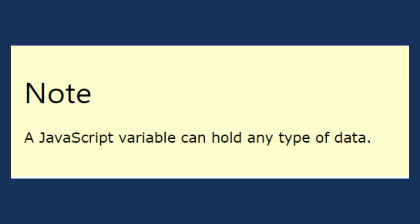JavaScript is dynamically typed. If you have x equal to 1000, the variable is declared as 1000 and that will be dynamically generated. The difference is that if you use Java, you must declare an integer type for a number.